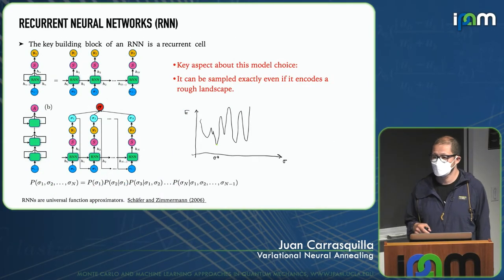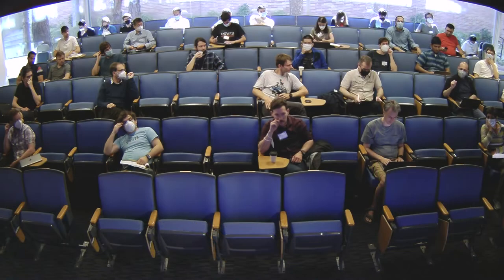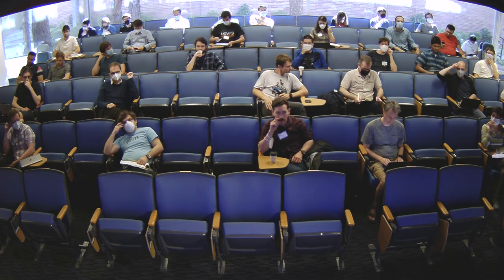A question was raised: why use a recurrent network instead of a fully connected network? The answer is that fully connected neural networks in general do not allow exact sampling — you usually have to use Markov chain Monte Carlo, which we want to avoid.